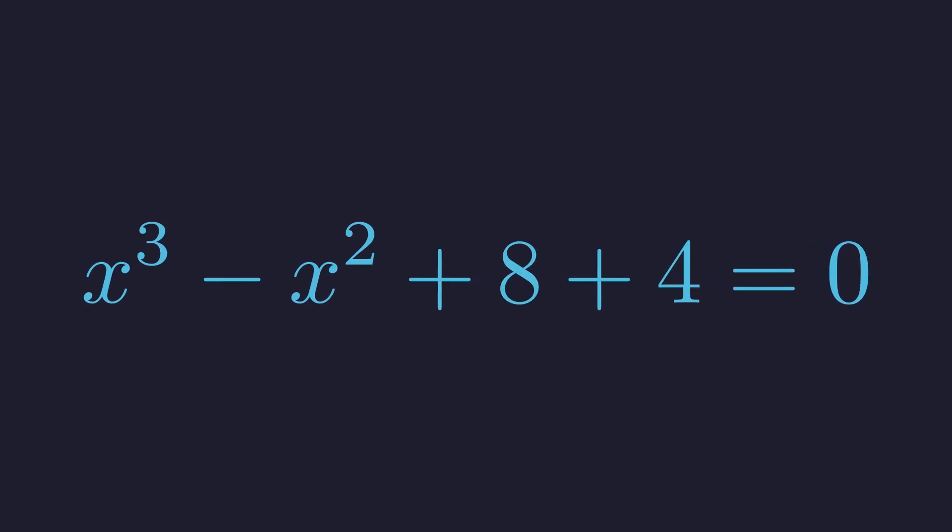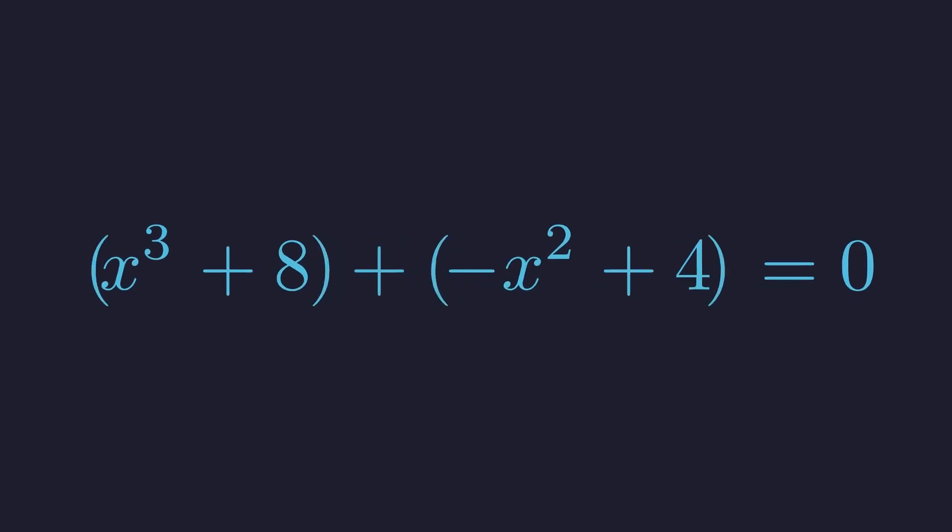So we can write this as x cubed minus x squared plus 8 plus 4 equals 0. Now we can rearrange these terms, grouping the cubic terms together and the quadratic terms together. We have x cubed plus 8 and then negative x squared plus 4. To reveal a difference of squares, let's factor out a negative from the second group.